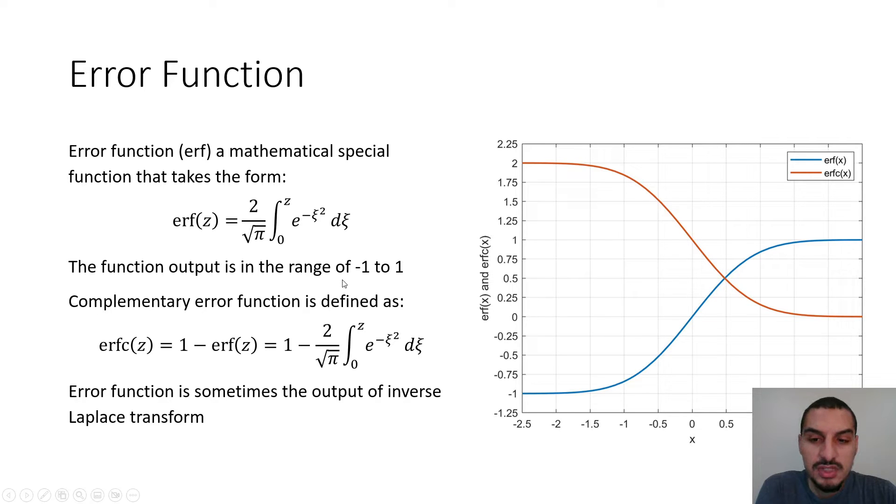The output of this function is in the range of negative 1 to 1, and this is how the function looks like. This is the blue line in this curve here. It starts with negative 1 and ends with 1. Its value varies from negative 3 to 3, or you can say negative 2.5 to 2.5, and this is the region where the value changes, and this is where we seek the value of the error function in this region, or in this part, or values of x.